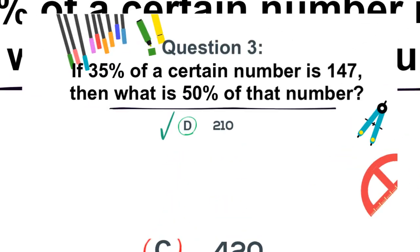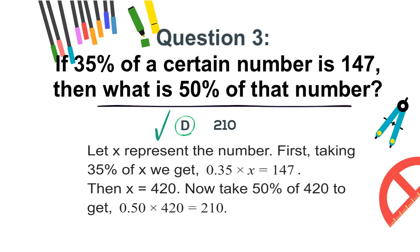The correct answer is d. 210. Let x represent the number. First taking 35% of x, we get 0.35 times x equals 147. Then x equals 420. Now take 50% of 420 to get 0.50 times 420 equals 210. Answer c only takes into account the first part of the solution. Answer b takes 50% of 147. And answer a, 50% of answer b.